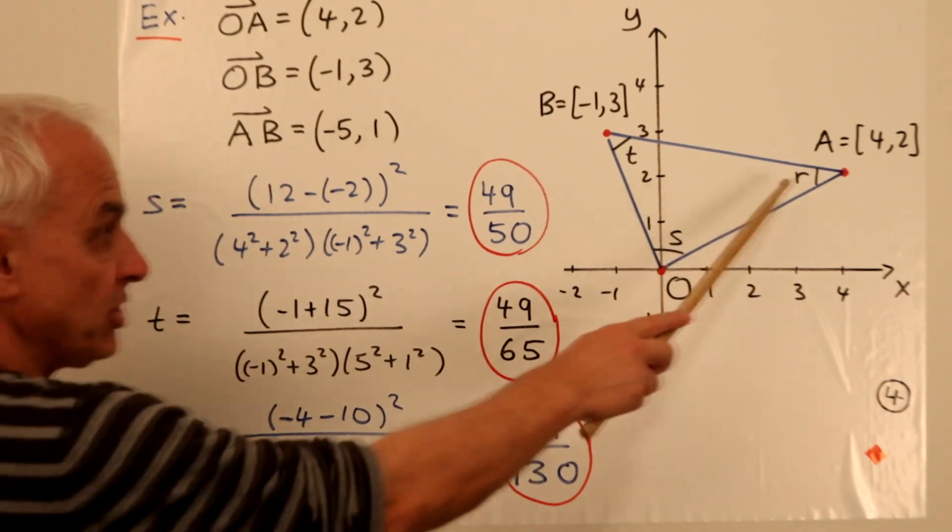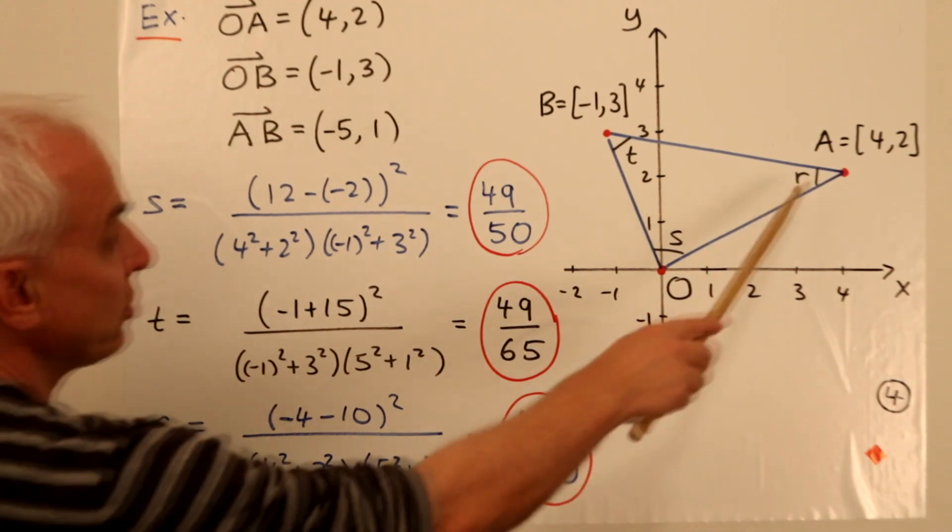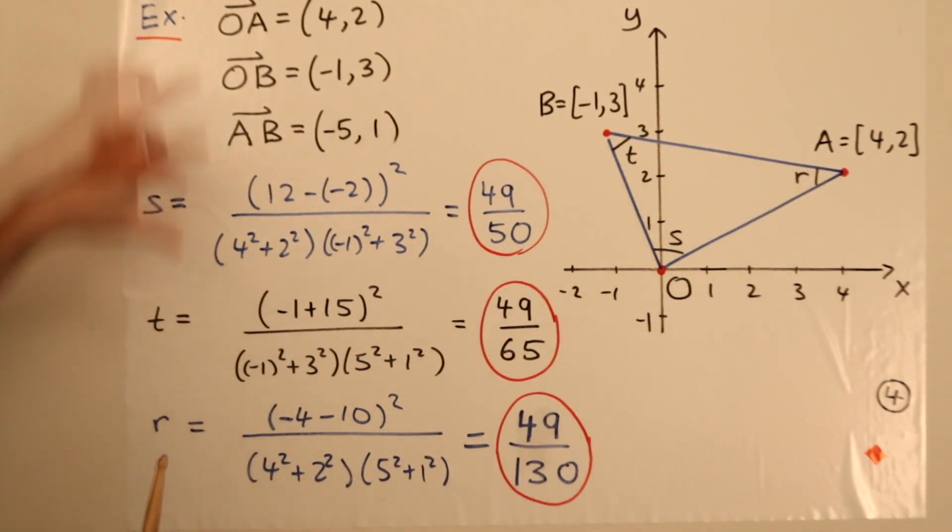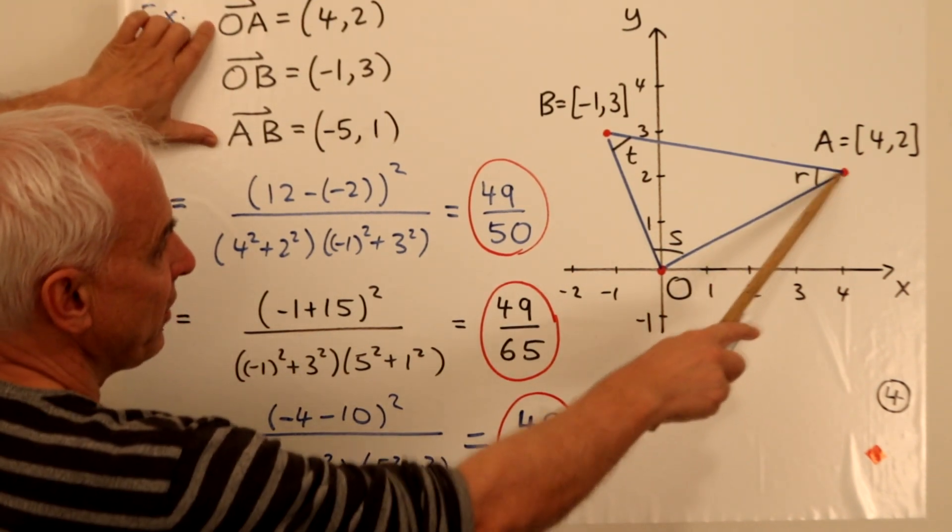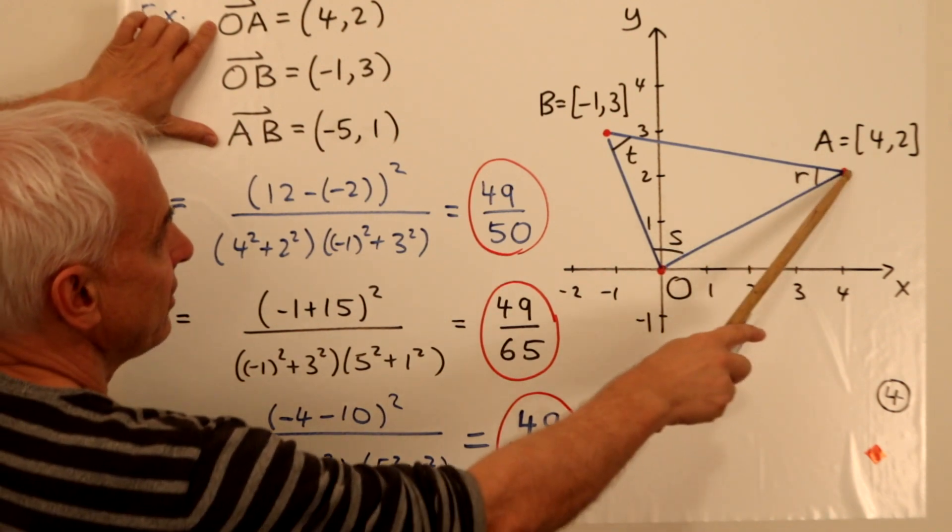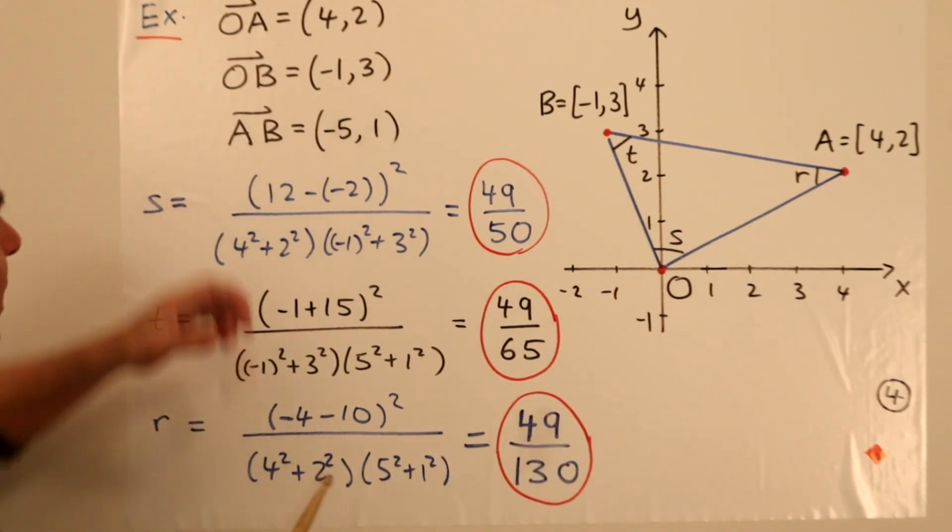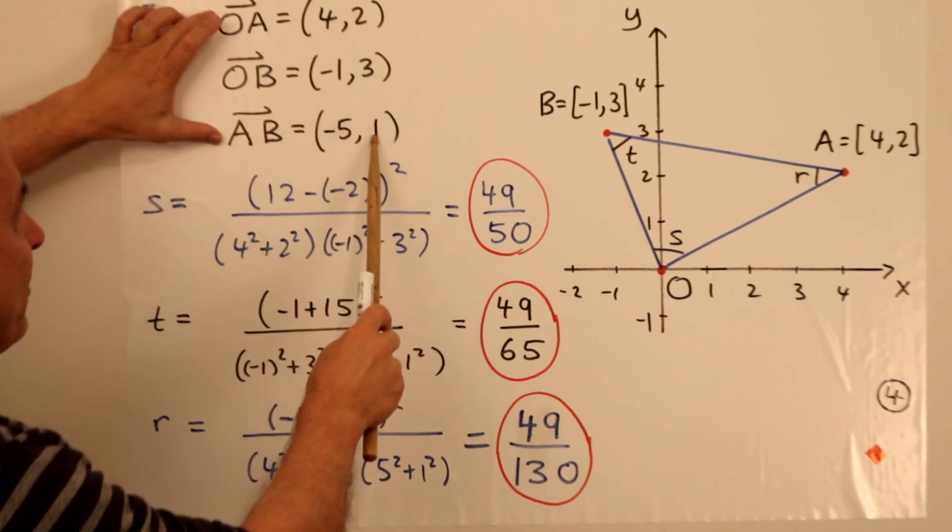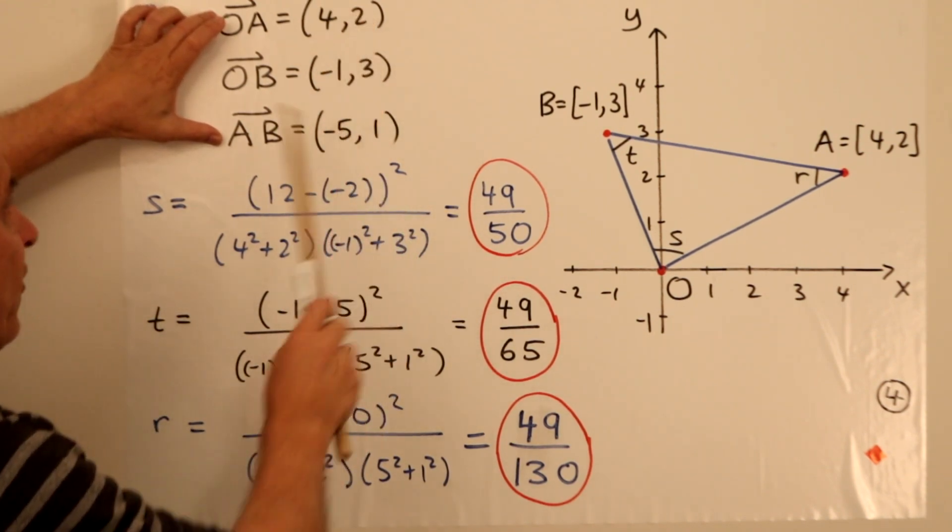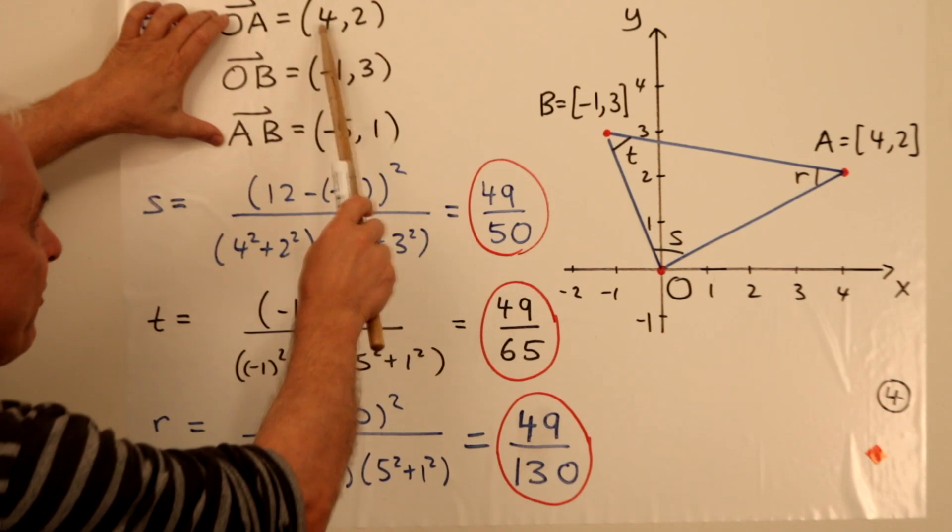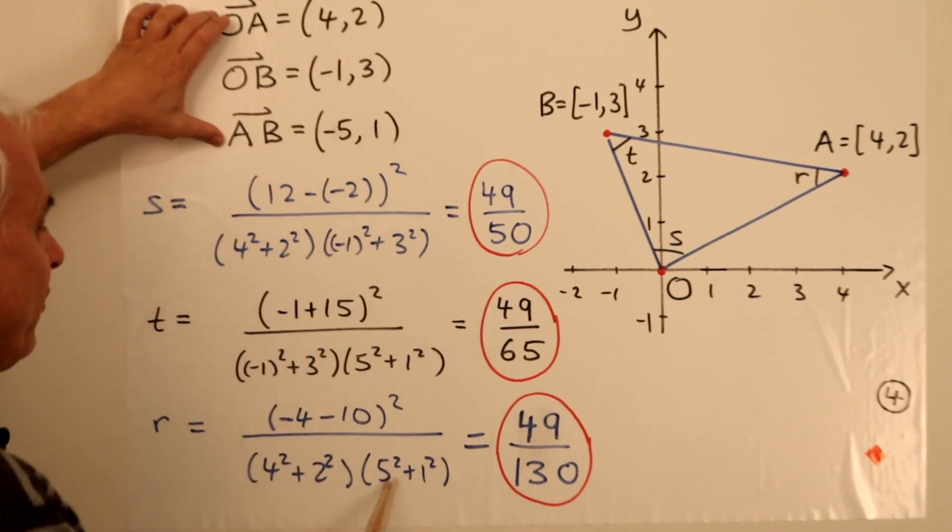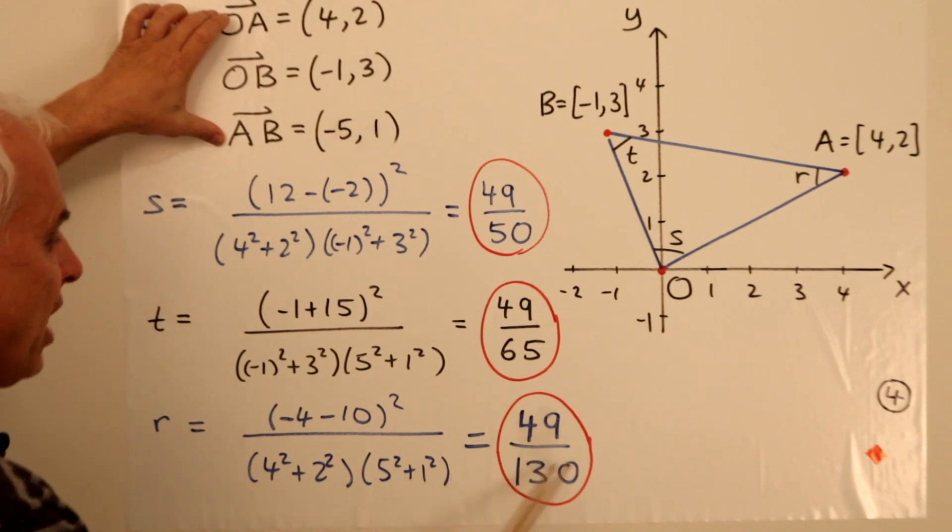And finally, the spread R, which is over here. Well, that involves the vectors OA and AB. So the first vector and the third vector. In fact, if we're at this point here, then we would use the negative of this one and we would use this one here. Then we would get minus 4 times 1 minus 2 times minus 5. So we would get minus 4 minus 10 all squared. Divided by the sum of the squares here and the sum of the squares here multiplied together. And that gives us 49 over 130.